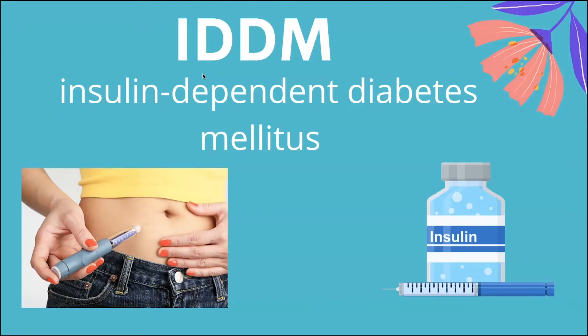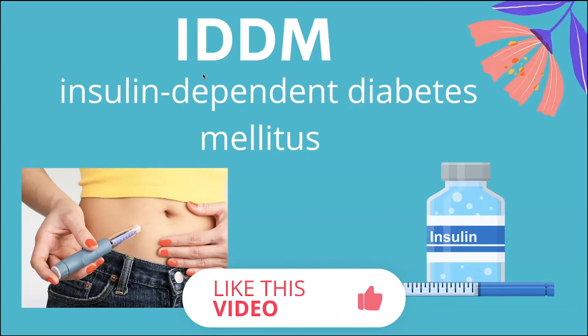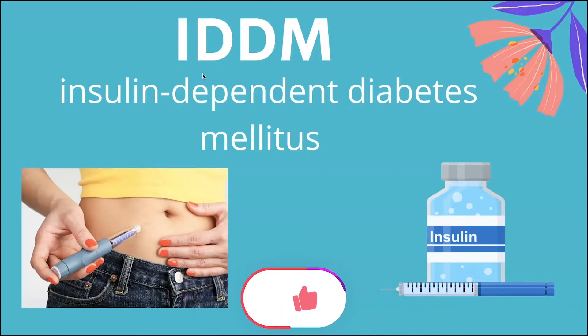IDDM stands for insulin-dependent diabetes mellitus. This is an older term because it used to refer to type one diabetes, since type one requires insulin to treat, whereas type two can be treated with oral medication. However, some people have type two diabetes so out of control that they also need insulin. So when referring to diabetes, make sure you write either type one or type two, because some people with type two also use insulin.